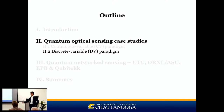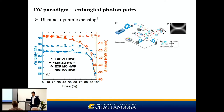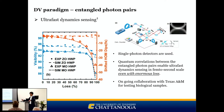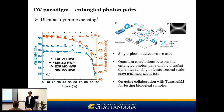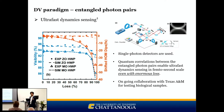For discrete variable sensing, we can probe ultra-fast dynamics. Even when 80% of photons are lost to a biological sample through scattering, we can still probe dynamics in the femtosecond range — 10 to the minus 15 seconds — using discrete variable entangled photon pairs. This capability is something classical techniques would struggle to achieve under such high-loss conditions.